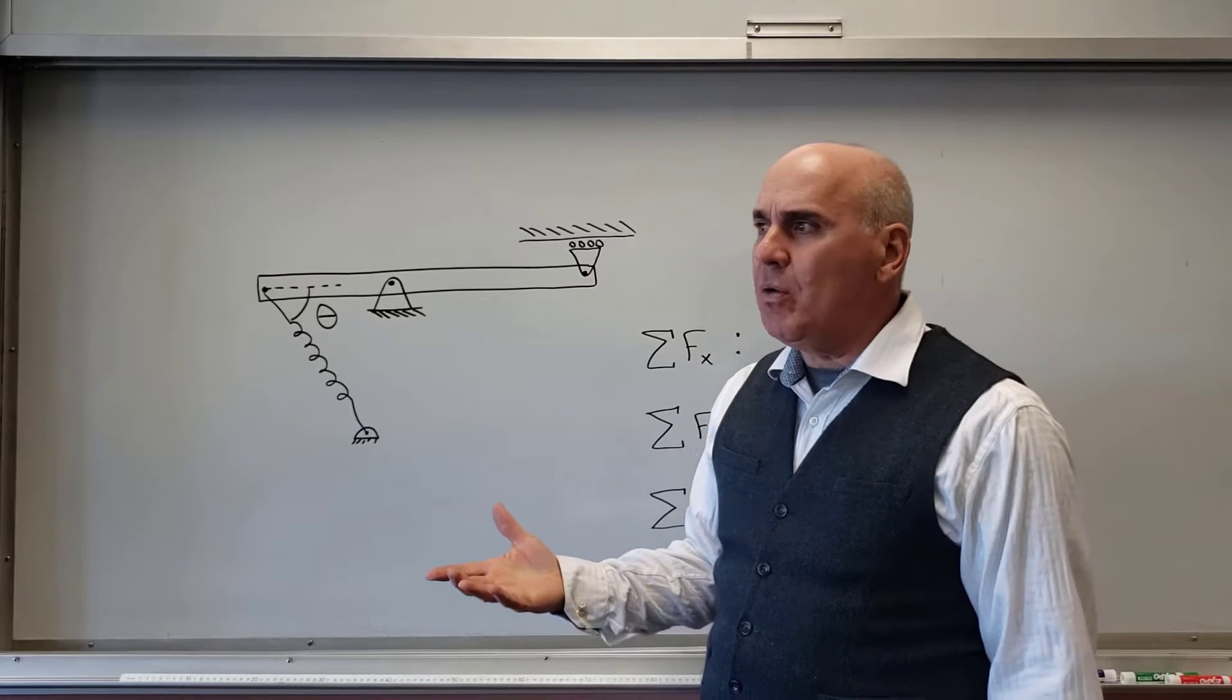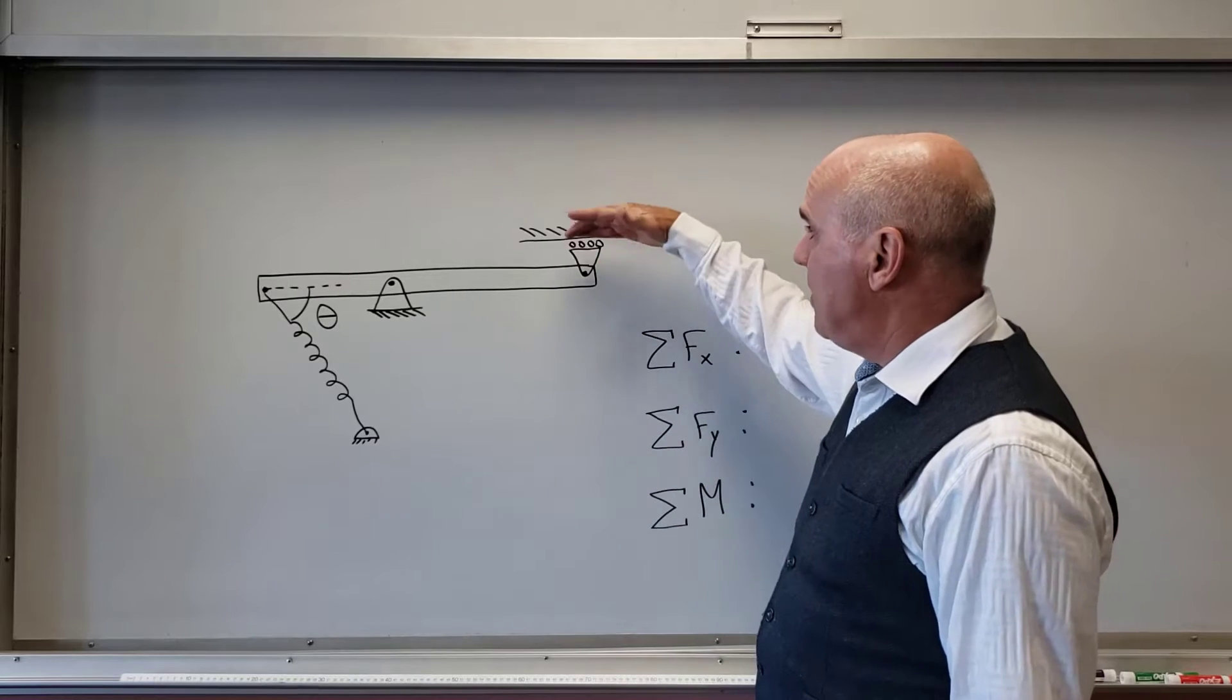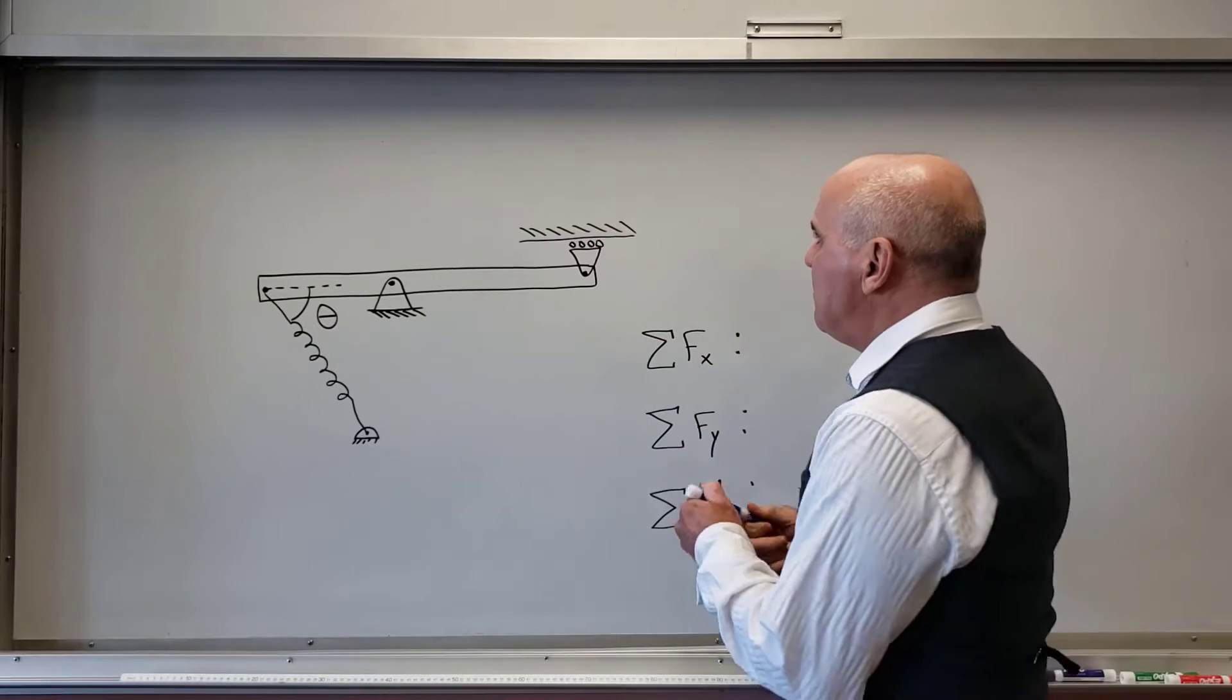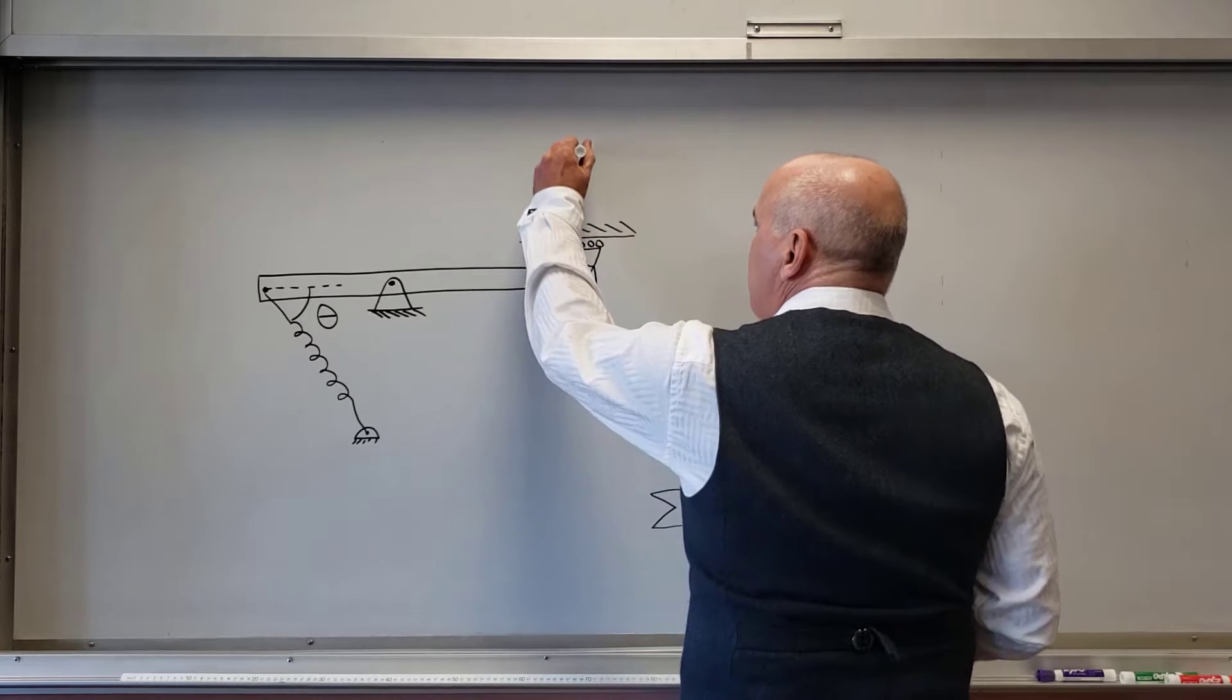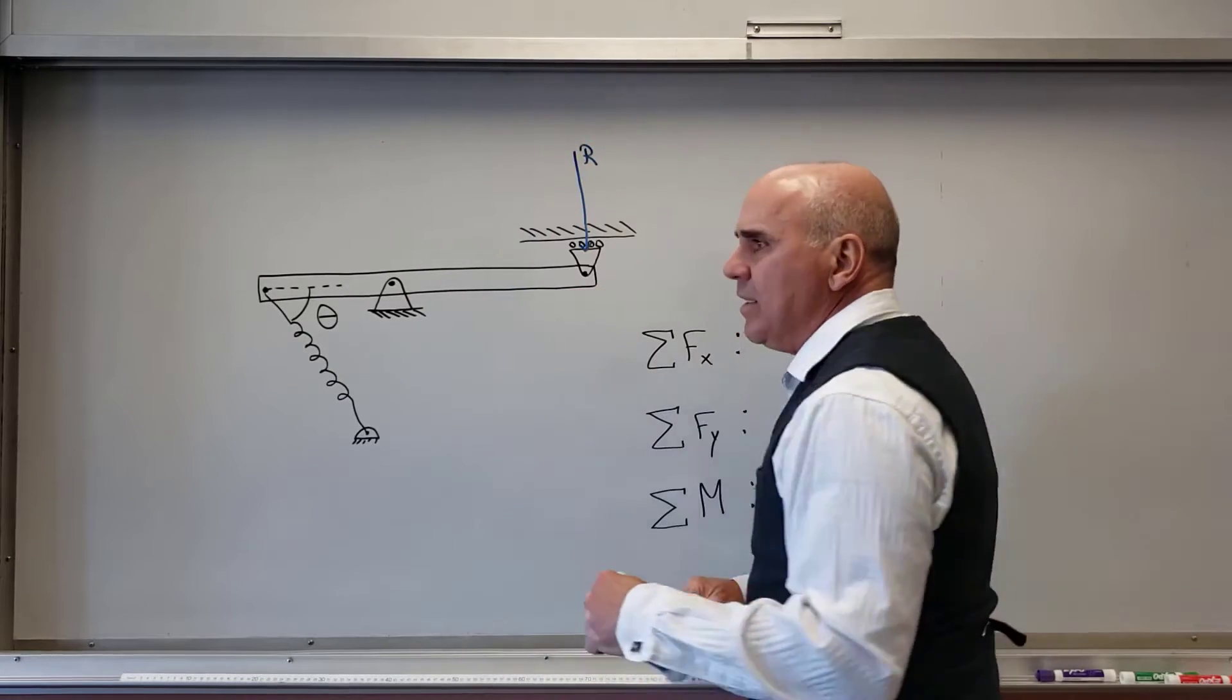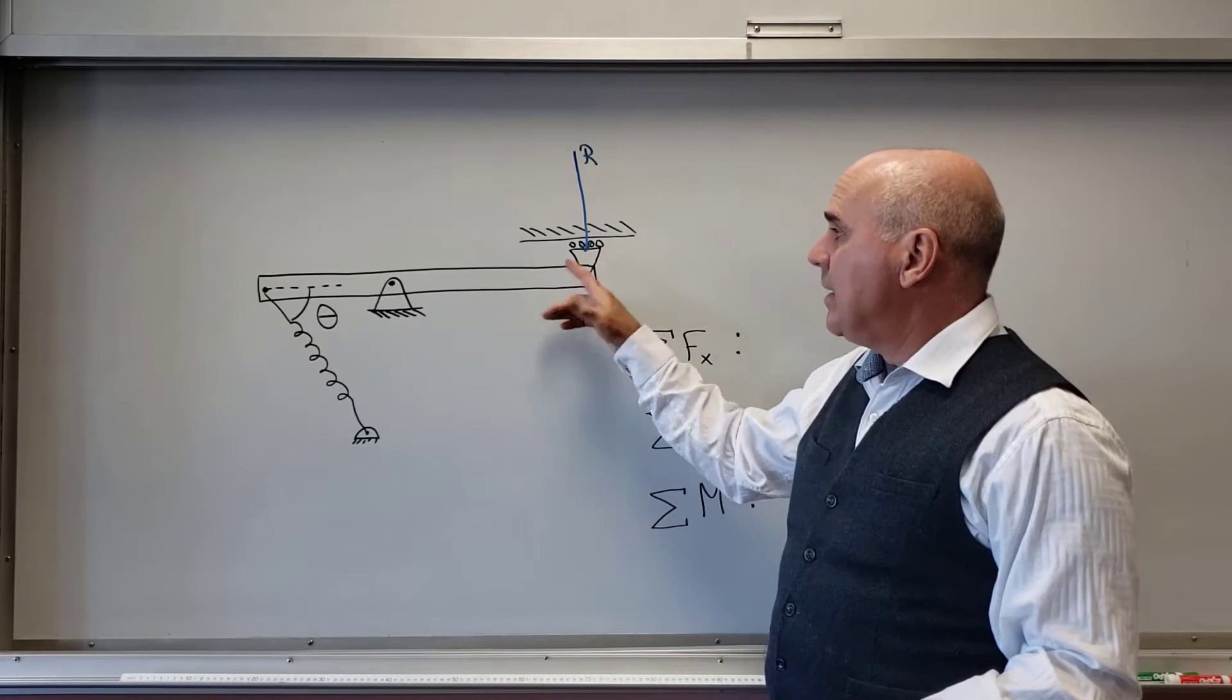Now remember that rollers can only exert forces normal to the surface. Now in this particular case, it's actually up against like a ceiling of some type. And so the roller is going to have some force and it's going to be, I'm going to label it R, so that's the force due to the roller acting on the beam.